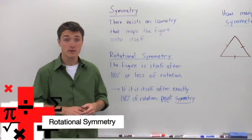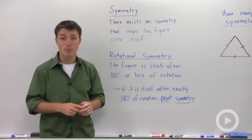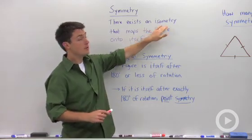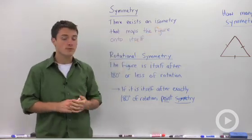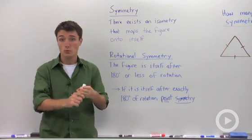In geometry, we can look at a figure and say that it has symmetry if there is an isometry that will map part of the figure back onto itself. An isometry, remember, is a rigid transformation—that is, a translation, a rotation, or a reflection.